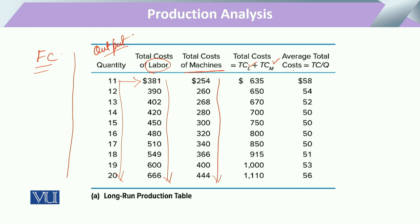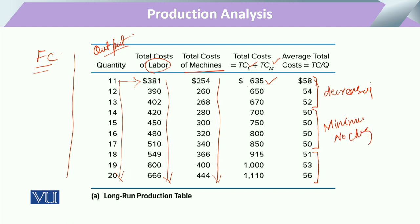The average total cost is somewhat decreasing — from 58, then 54, then 52, and likewise. After this there is an optimal minimum point. After that the average cost is again increasing. So this first part shows that average total cost was decreasing, the second part shows that it is at its minimum with no change, and the third part shows that average cost is again increasing.